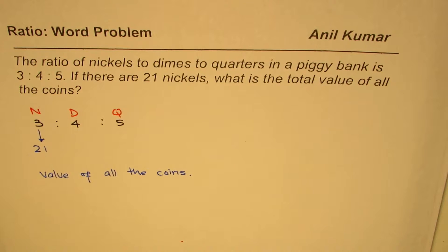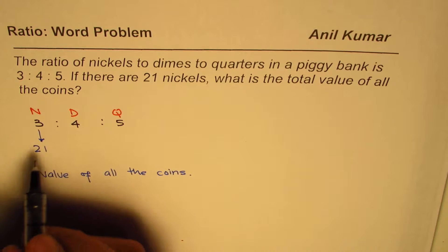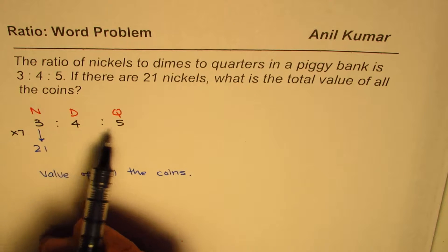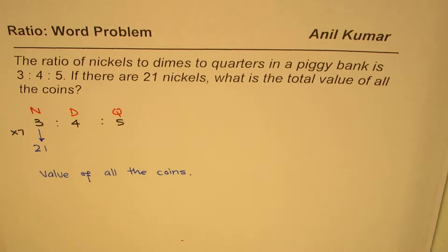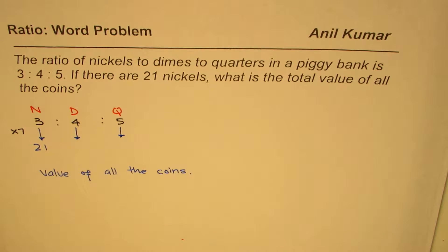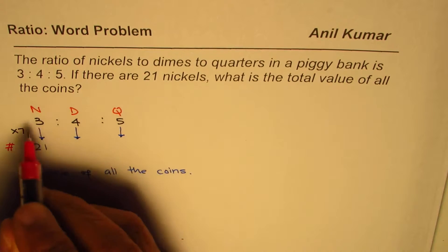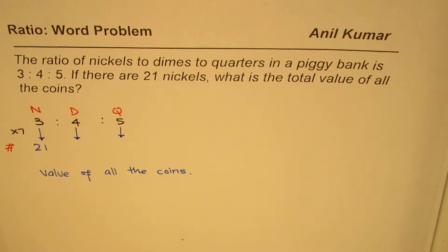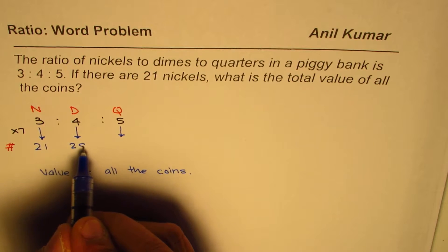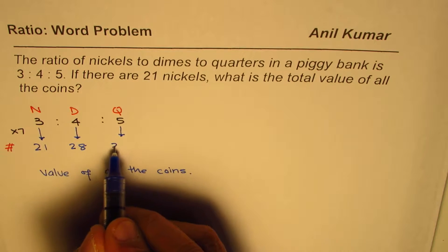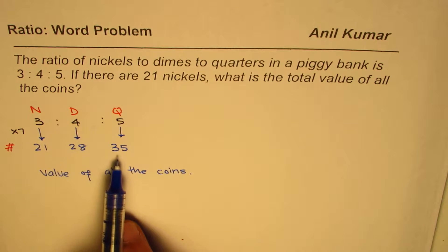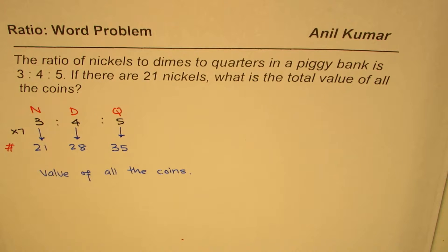We have to see 21. So 3 times what is 21? We know 3 times 7 is 21. So if I multiply all these by 7, we know how many dimes and quarters should be there. 7 times 4 is 28 and 7 times 5 is 35. So we have 21 nickels, 28 dimes, and 35 quarters. We now know the number of coins.